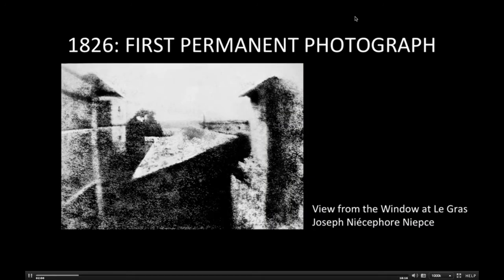Fast forward to 1826, when Frenchman Joseph Niepce created the first photograph by adding a piece of light-sensitive material to the camera obscura. He called the process heliography, meaning from the sun. Although it's a bit hard to tell, the picture is of a barn and some buildings. Note that the light is on both the left and right sides of the image, due to the eight-hour long exposure.